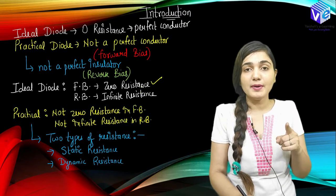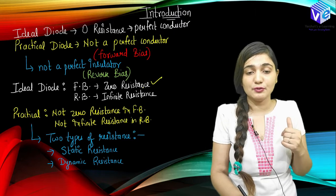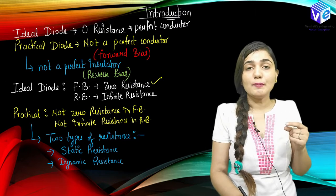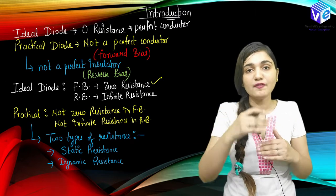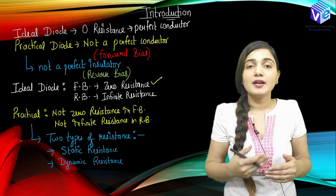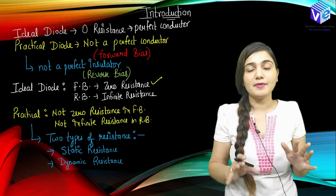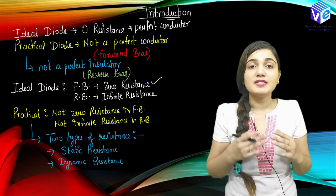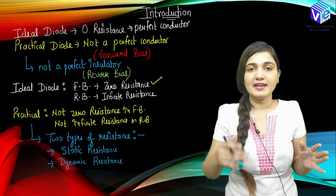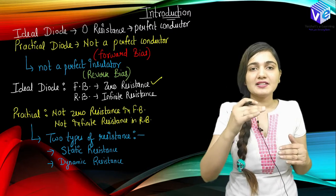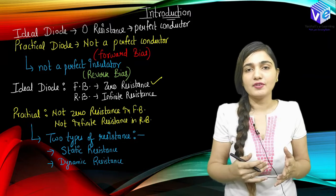I hope you remember we talked about the intrinsic electric field in the previous video. Because of the intrinsic electric field, which opposes the flow of current inside the diode, we will never have zero resistance to the flow of current. The intrinsic electric field is going to provide some resistance to the flow of current.